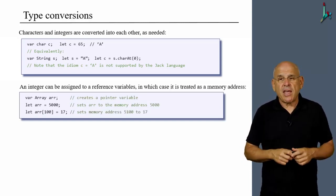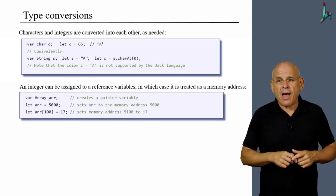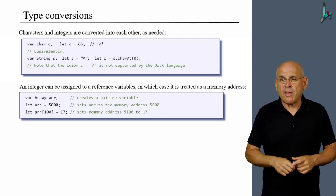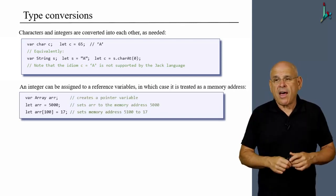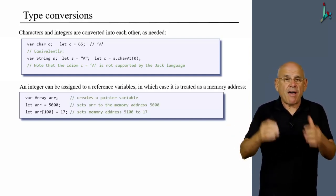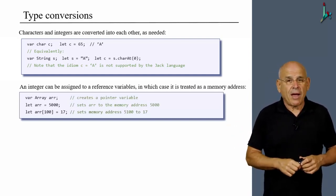So from now on, if you say ARR sub 100 equals 17, the compiler will generate code that will cause the RAM at location 5000 and 100, which is 5000 plus 100, to become 17.